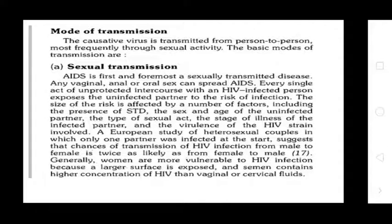Mode of transmission of AIDS: The virus is transmitted from person to person most frequently through sexual activity. Sexual transmission is the primary mode. Any vaginal, anal, or oral sex can spread the virus. Every single act of unprotected intercourse with an HIV-infected person exposes the uninfected partner to the risk of infection. The risk is influenced by the presence of STDs, the sex and age of the uninfected partner, the type of sexual act, the state of illness of the infected partner, and the virulence of the HIV strain. Studies suggest transmission from male to female is roughly twice as likely as female to male. Women are more vulnerable because of larger exposed surface area and because semen contains higher concentrations of HIV than vaginal and cervical fluids.